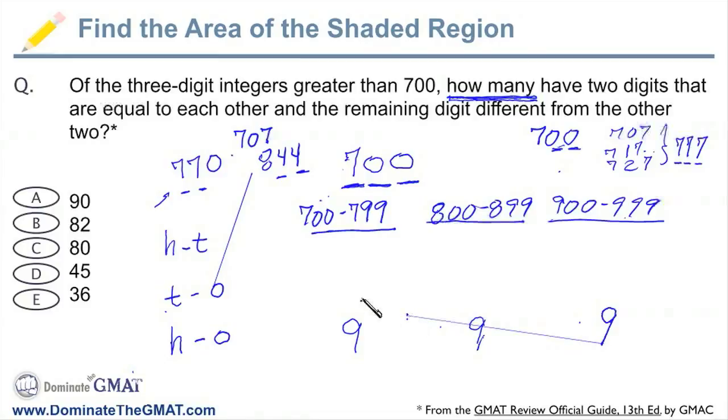Is this pattern going to apply for the tens and the ones? Let's look. For the tens and the ones, we would have 700, but that doesn't count. How about 711? How about 722? 733? 744?